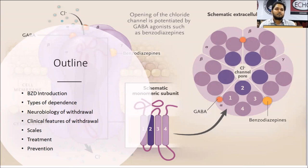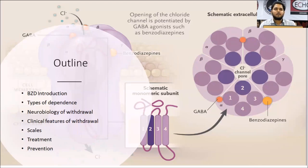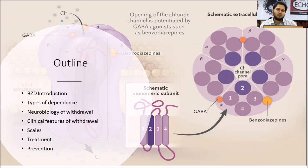I'll cover the types of dependence — a question that recently came up — along with the neurobiology of withdrawal, why withdrawal happens, the clinical features of withdrawal, the most useful assessment scale, treatment, and prevention. Even though my topic is about withdrawal, I'll stretch slightly beyond it to cover aspects important to management.